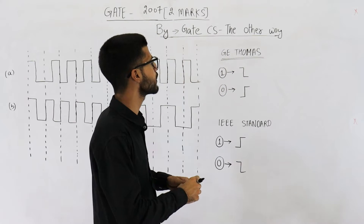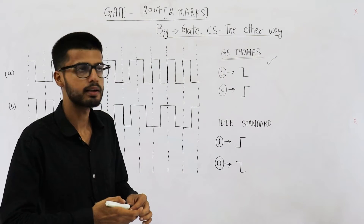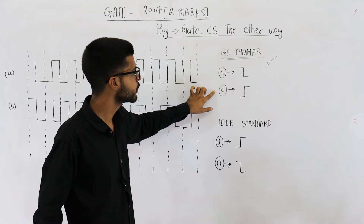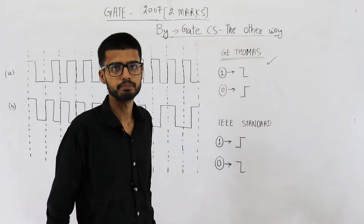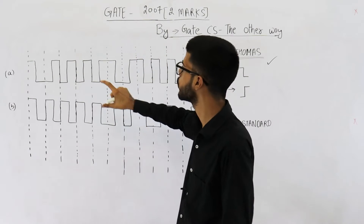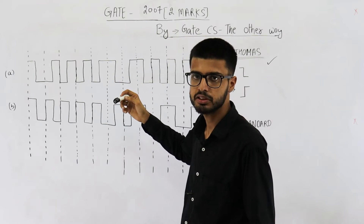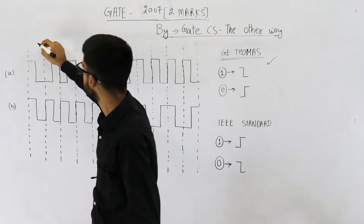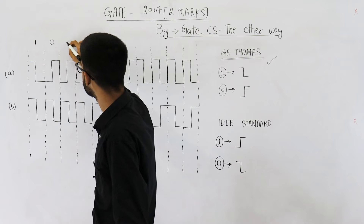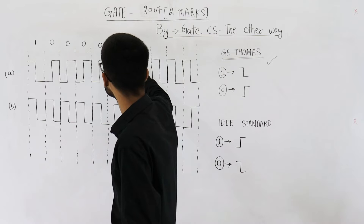Let us first solve according to the GE Thomas standard. In this standard, 1 is encoded by a transition from high voltage to low voltage, and 0 is encoded in the opposite manner. So let's see what the bit pattern is. We have a transition from high to low — that means this bit is 1. This bit will be 0. Here the bit is 0, here also 0, here also 0, and here also 1.